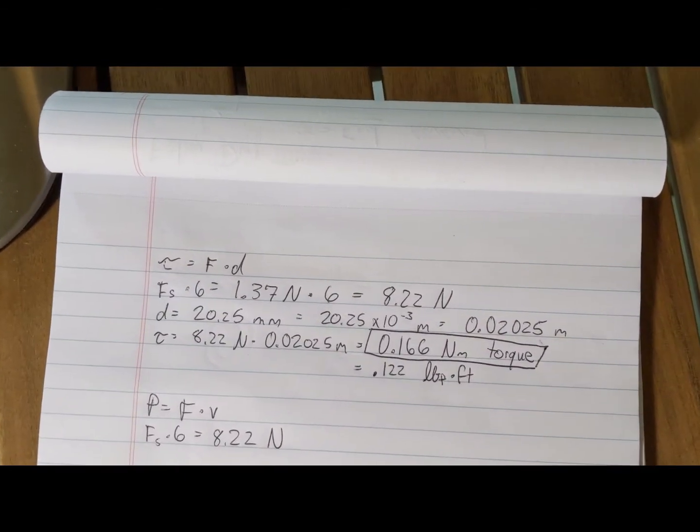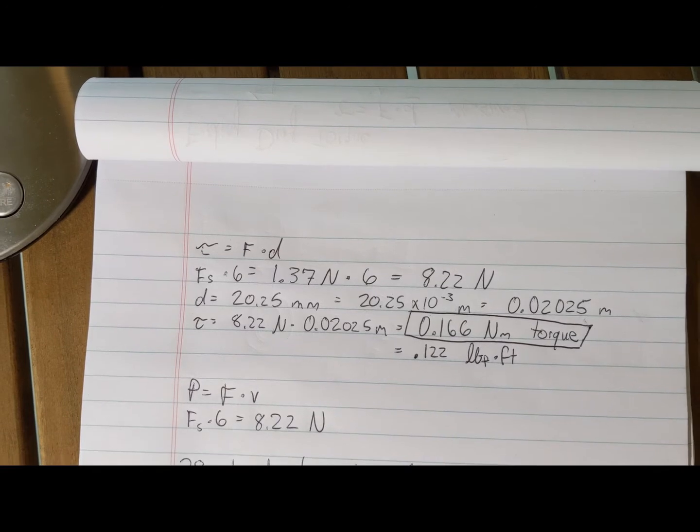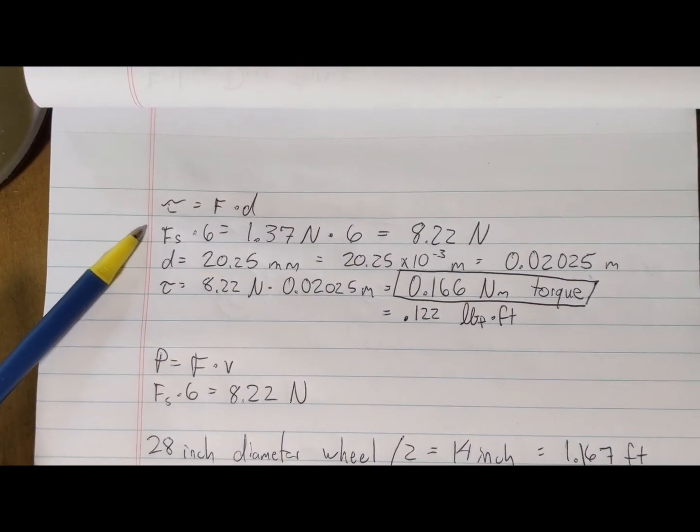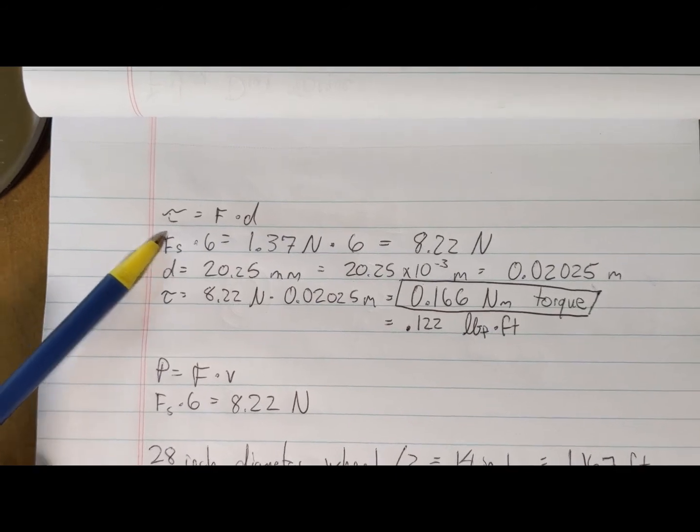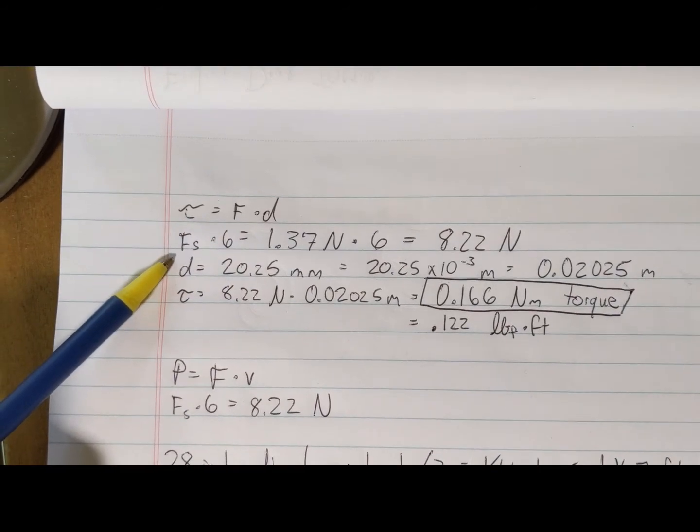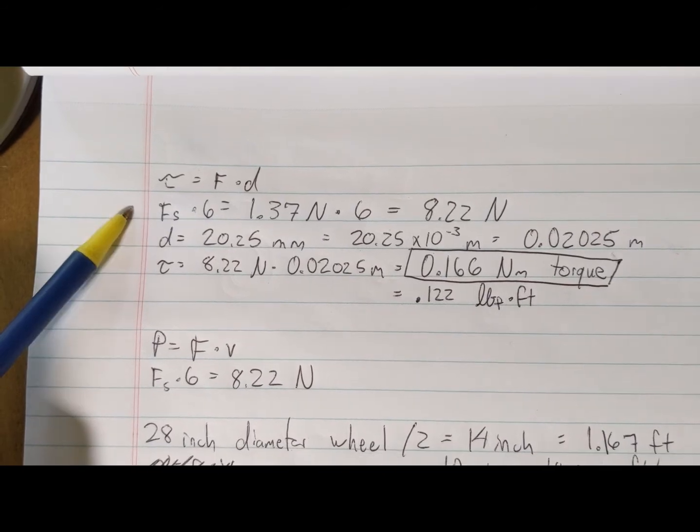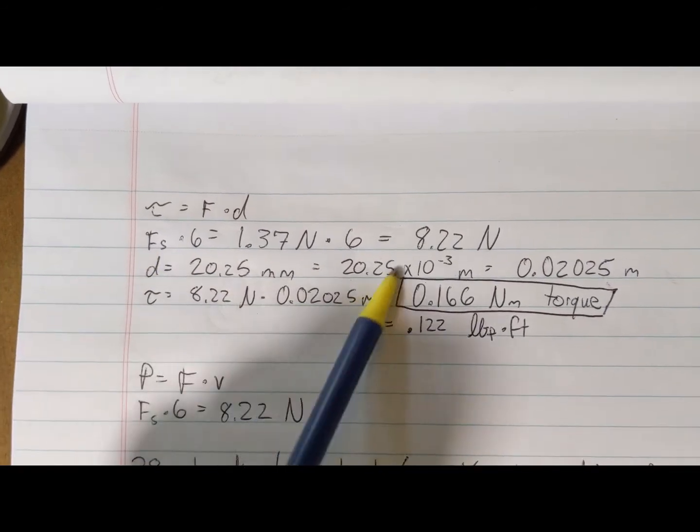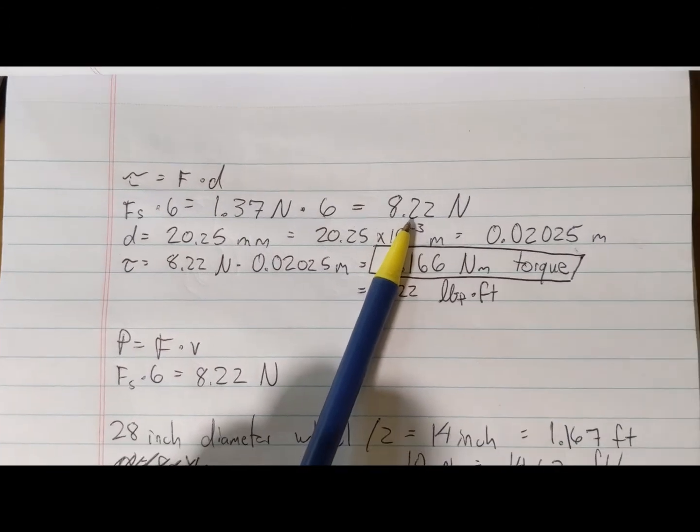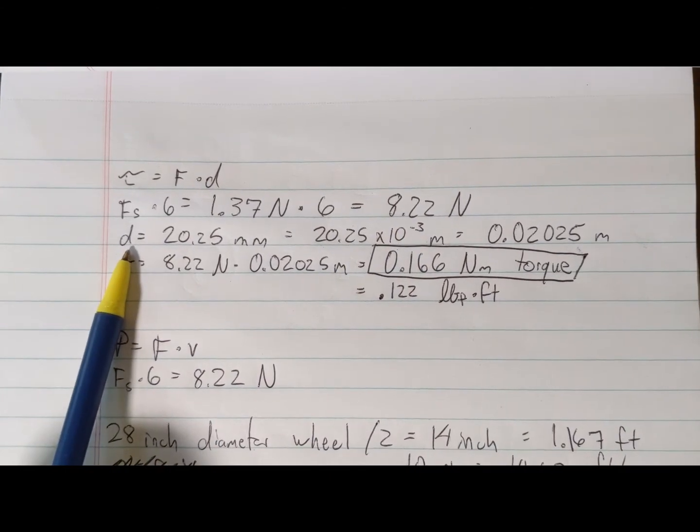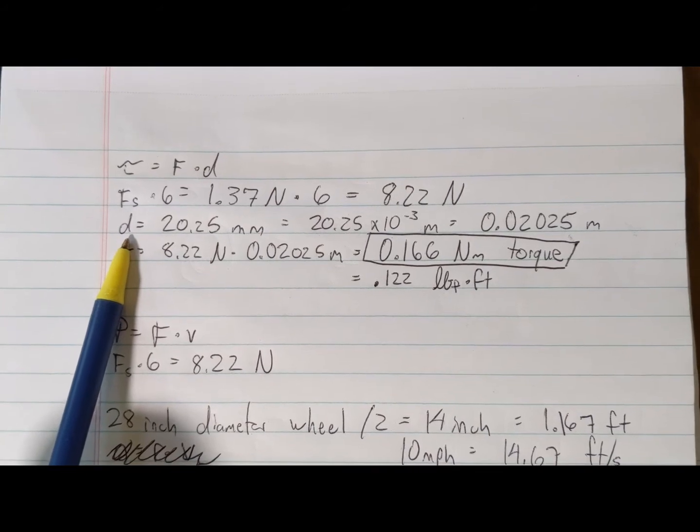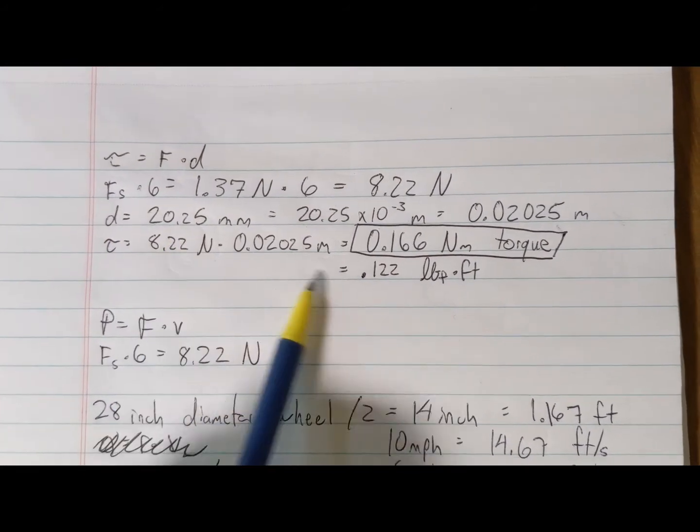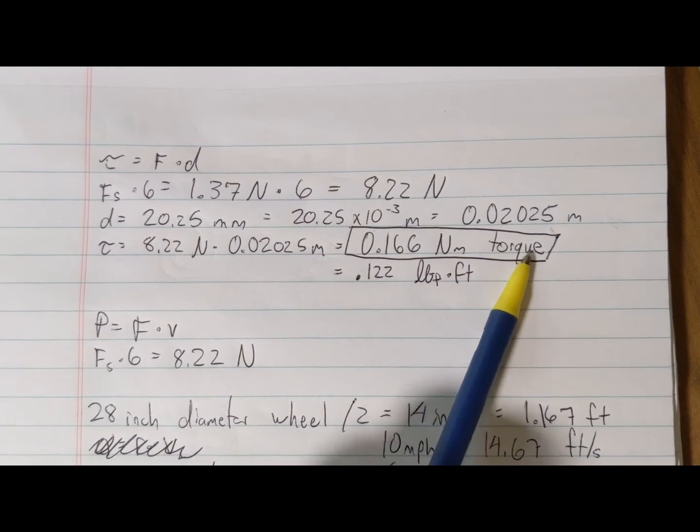We already know Fs from below and we've measured d, this small d here, this radius. Now with both of those, we can multiply them together and find our drag torque, and we'll also go through the exercise to find the drag power. Let's go through this math. First, we're going to find our hub torque using F times D. From earlier, the pawl force exerted on the drive ring is the spring force times 6, which equals 8.22 newtons.